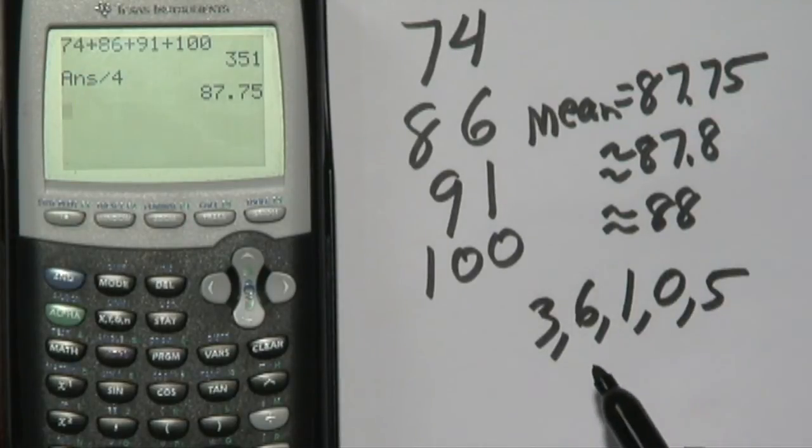Now what you want to do here is, again, add all the numbers together. You have 3 plus 6 plus 1, plus 0, plus 5, and add them all up. Now you get 15 here.